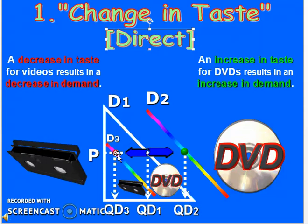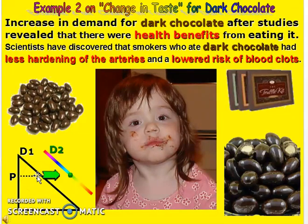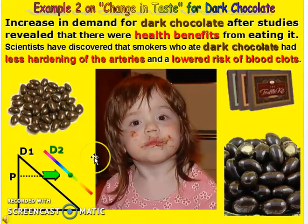If taste positively affects the demand, the demand curve shifts rightward, but the price remains constant — this is key to understanding the concept of shifting. Another example: if a doctor recommends the health benefits of dark chocolates, the price remains constant but demand increases from D1 to D2. This is a positive change in taste, and the demand curve shifts rightward.